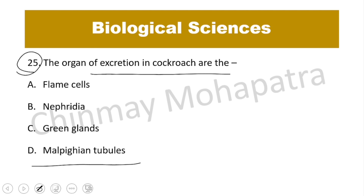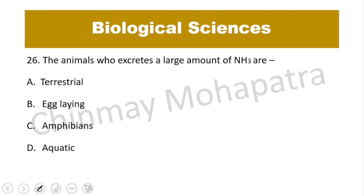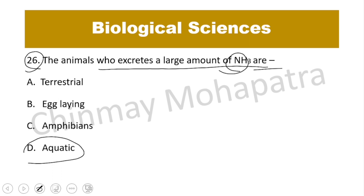Question number 25: The organ of excretion in cockroach is Malpighian tubules. Question number 26: Which animals excrete large amounts of ammonia? Aquatic animals excrete ammonia. Ammonia is most poisonous, and aquatic animals can tolerate it.